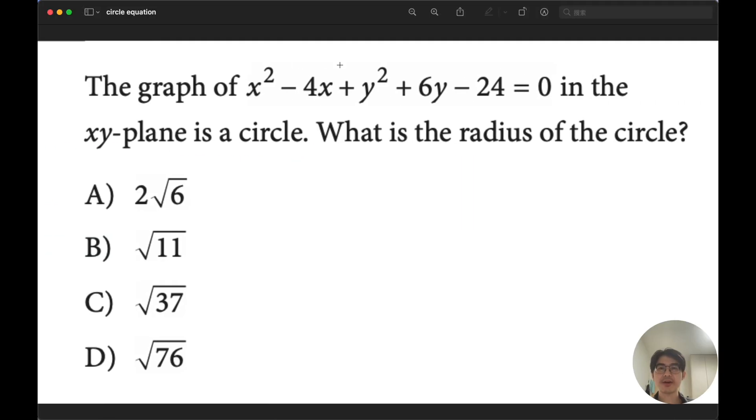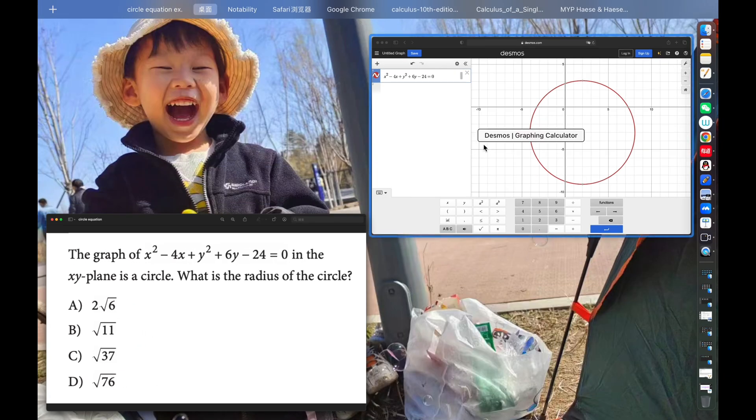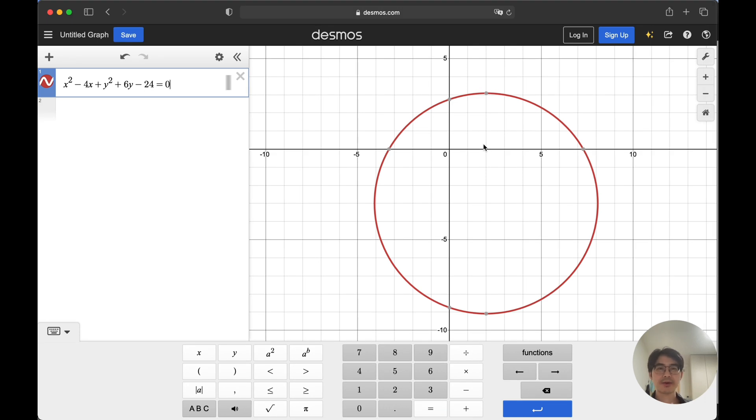For example, if we have this equation and we are looking for the radius of the circle, you don't have to complete the square. All you have to do is input the whole equation into Desmos and you will see a circle will pop on the screen.